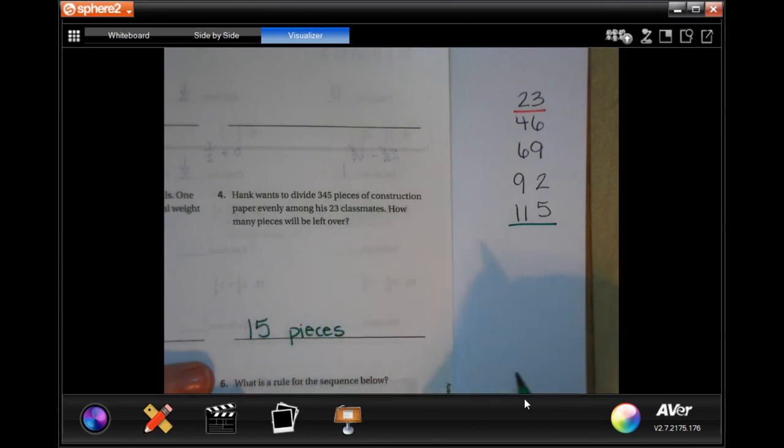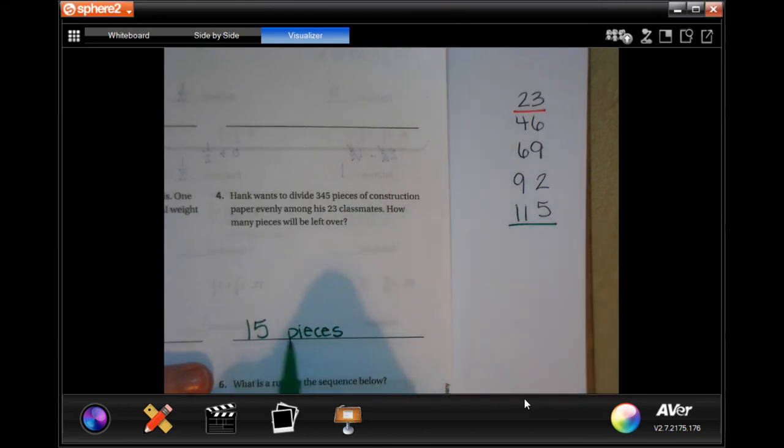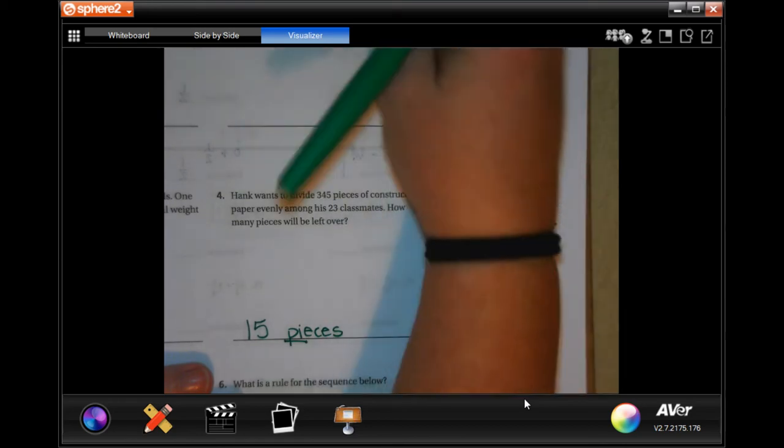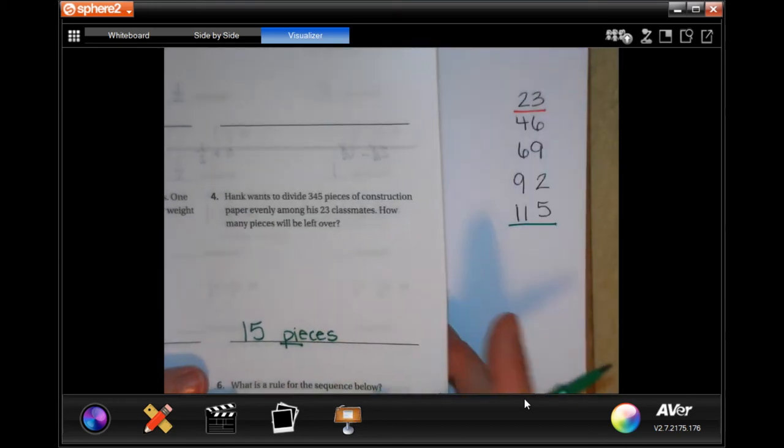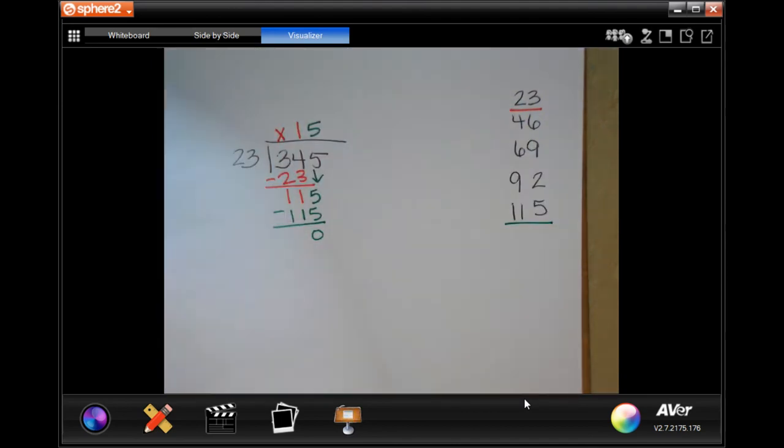So 15 pieces. If you ever can't remember how to spell pieces, it has the word pie in it. Pieces of pie. Everybody gets confused on the e or the i first.